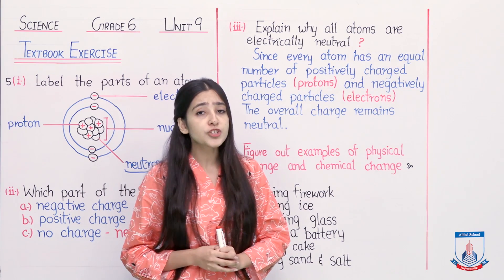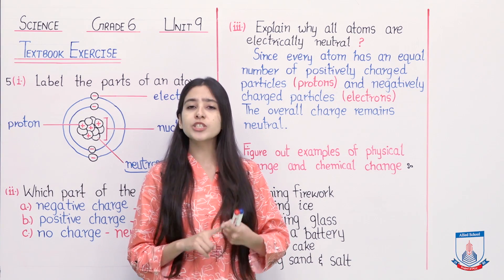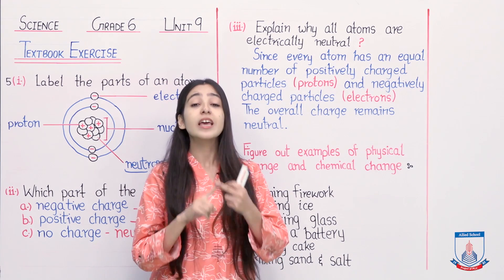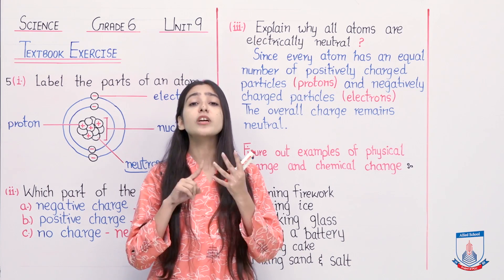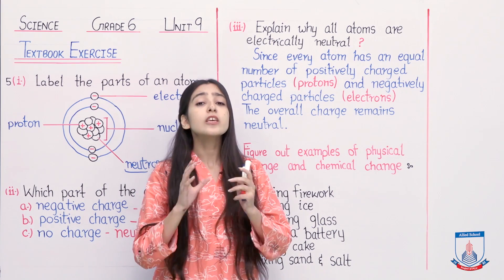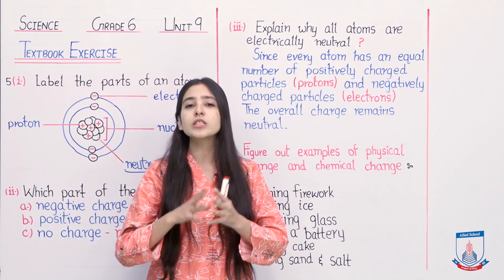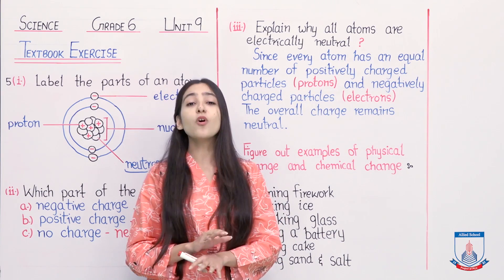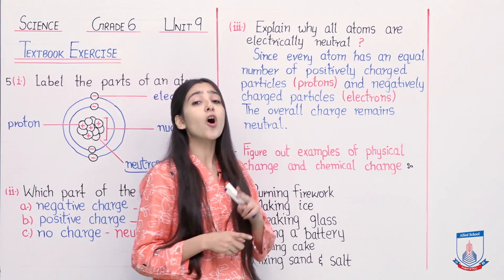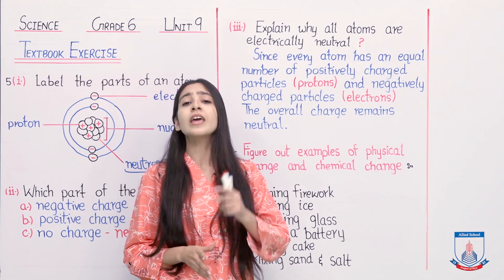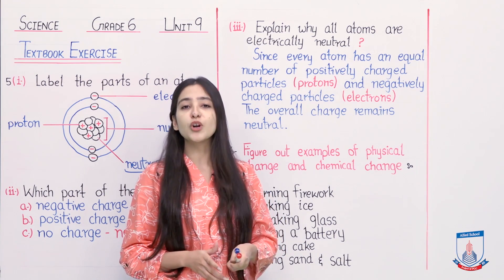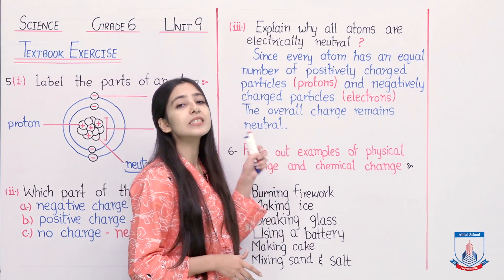Now we have learned the structure of an atom in which you have positively charged particles and negatively charged particles. There was also a particle which was neutral - no charge on them. If you were asked what overall charge is on an atom, you would say it is neutral, meaning it has no charge. But both positive and negative charges are present in it, so it could have been positive or negative. But why did it become neutral?